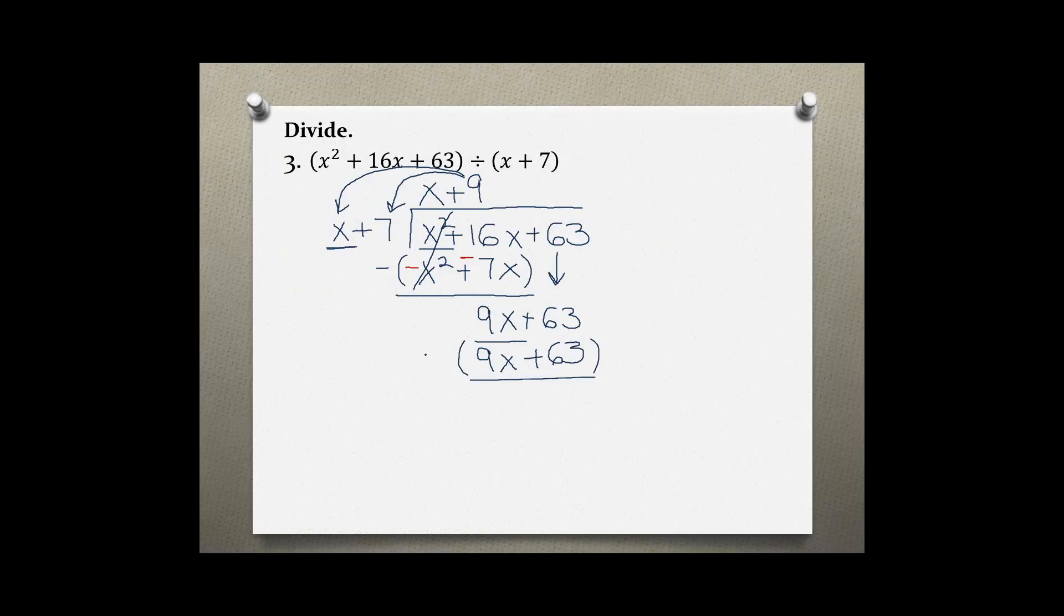Subtract, which changes the signs, and add down. 9x minus 9x is 0 and 63 minus 63 is also 0, so you have a remainder of 0, which means x plus 9 is your final answer.